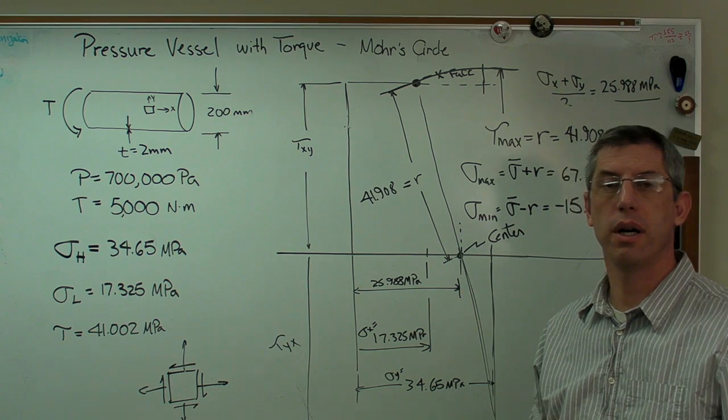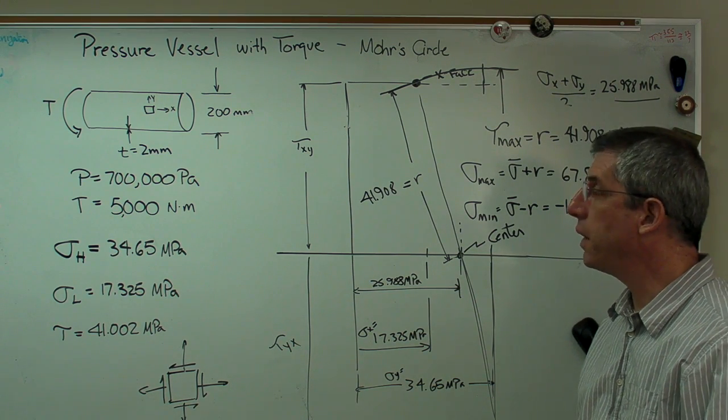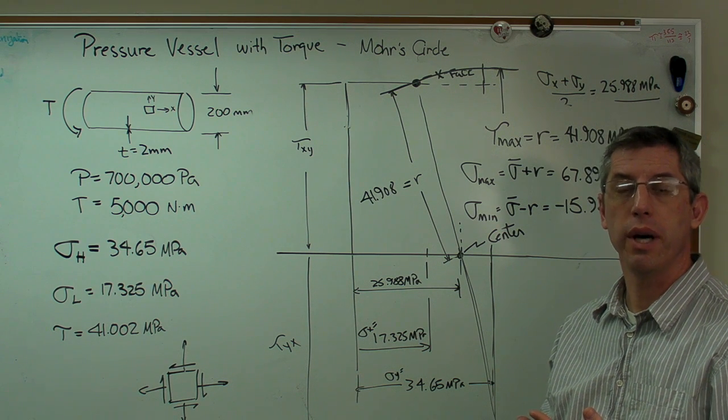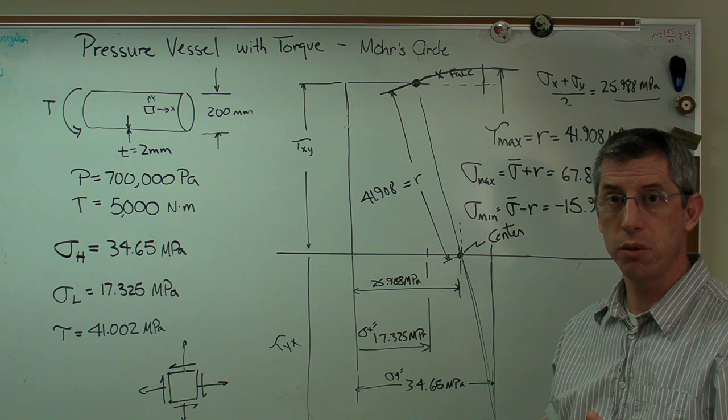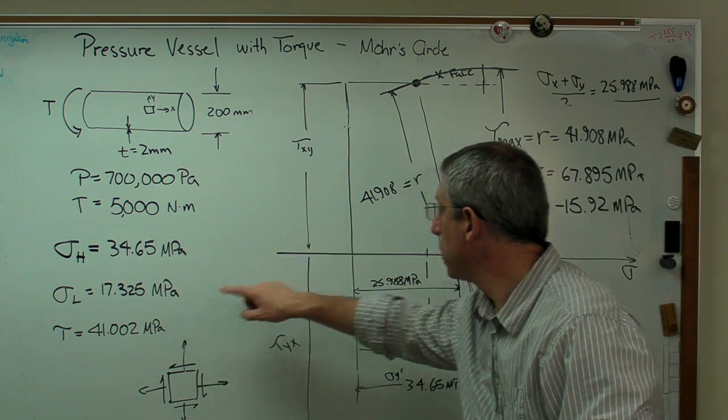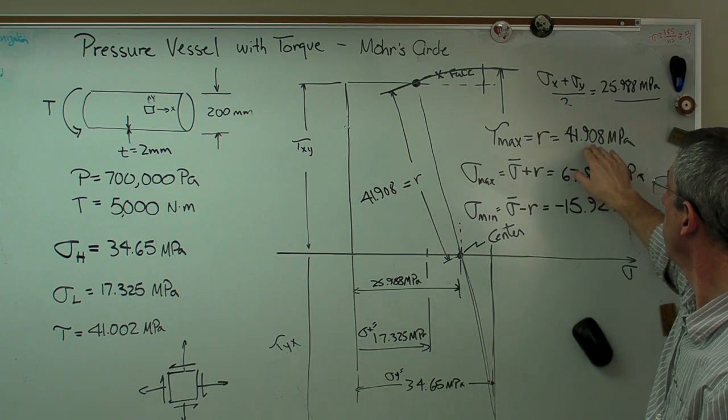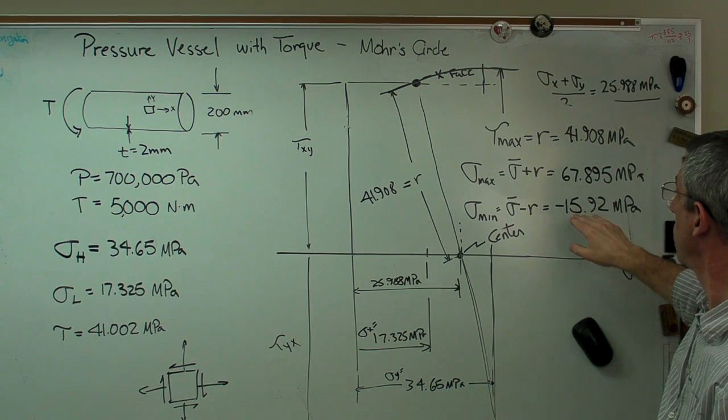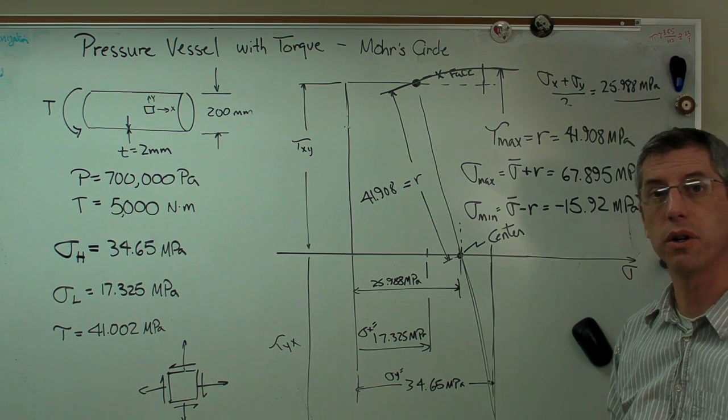So just to go back over what we've done, we started out with a pressure vessel that had a torque on it. We calculated the longitudinal hoop stress and shear stress based on the loads. Used those numbers to draw Mohr's circle and found maximum shear stress, the maximum normal stress, and the minimum normal stress using Mohr's circle.